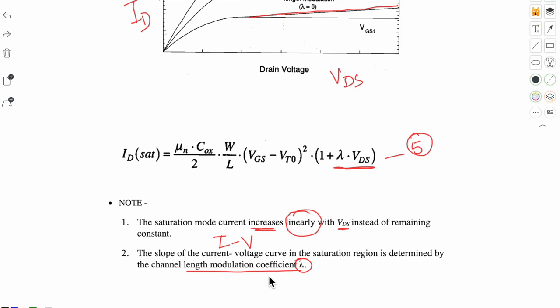All these constants, parameters, and coefficients that are coming, you need to pay attention to them. Don't get confused between them because questions are asked about these in tricky ways. When we solve numericals, you get confused whether this is body effect coefficient or channel length modulation coefficient. So make a list in your notebook and write down these parameters and coefficients, how they are denoted, where they are used, along with their equations.